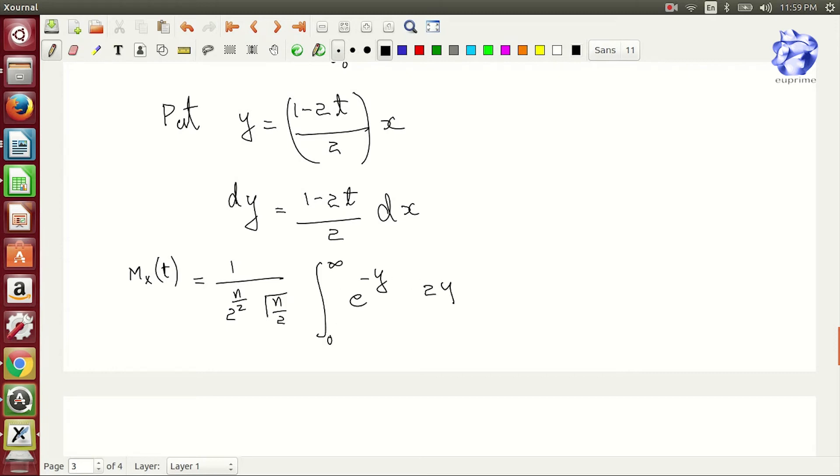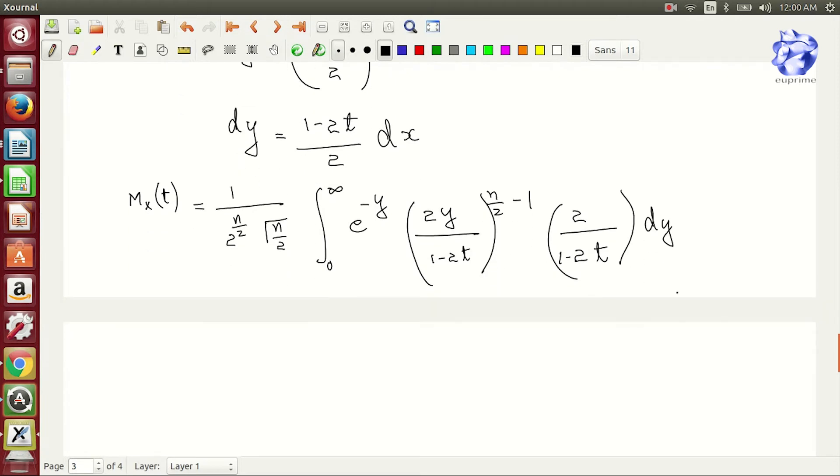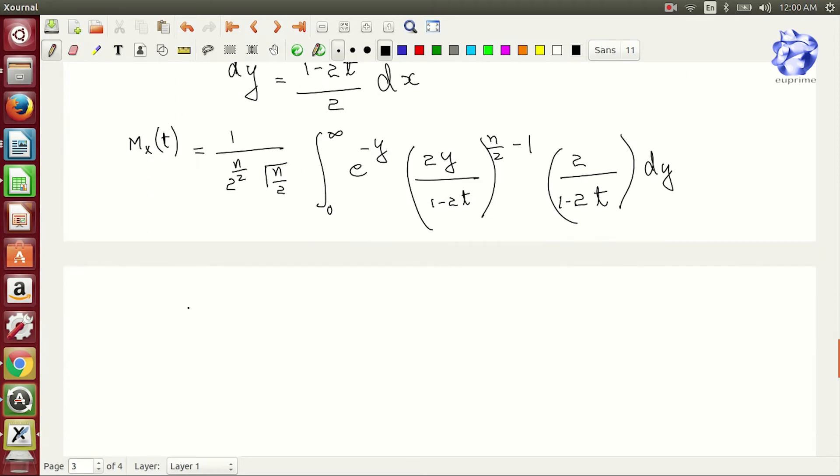mx of t is equal to n by 2 root n by 2 and then again you integrate the rest which we write, we simplify the same steps as 2t by n by 2 and this can be got on simplification from the integration part.